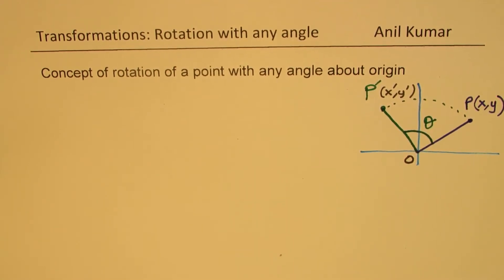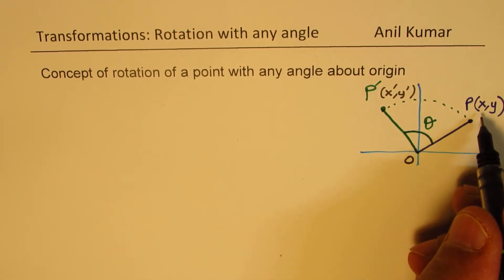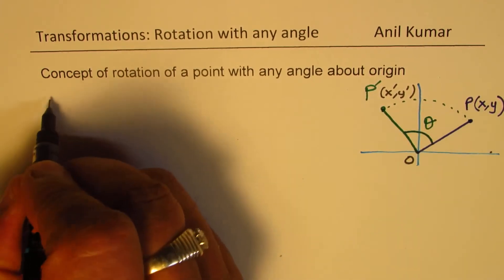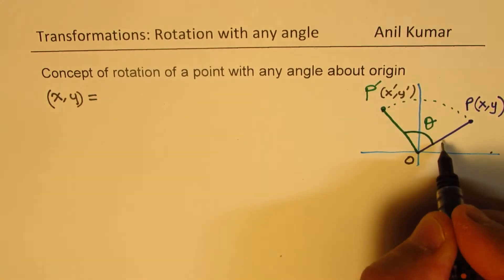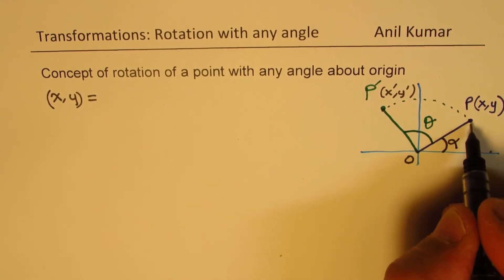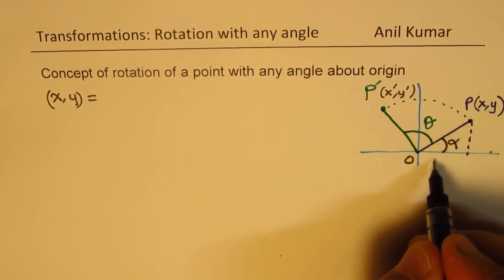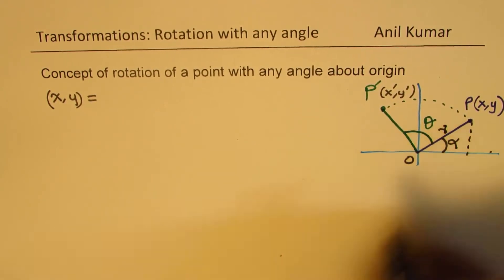Now since we are talking about angle, we should actually treat this as we do in trigonometry. We can write the coordinate x, y, let us say this angle here is alpha. In that case, the value of x is, and if this is r, O to P is r.